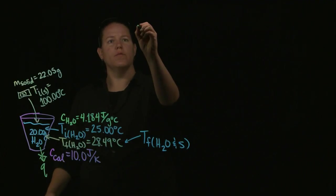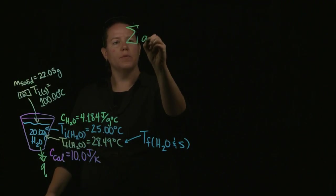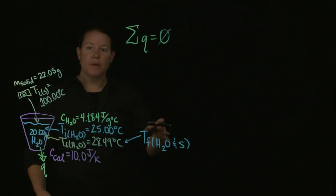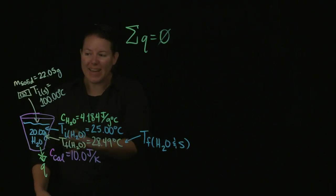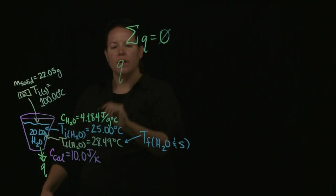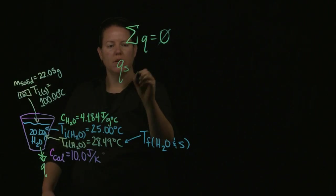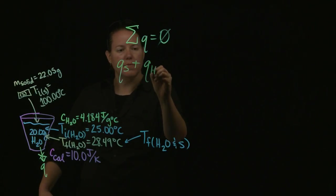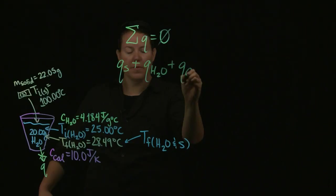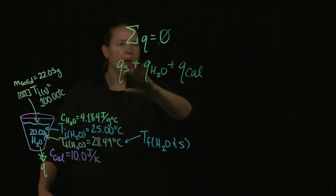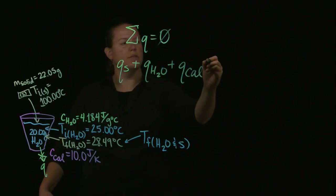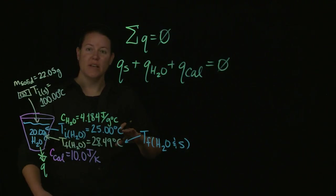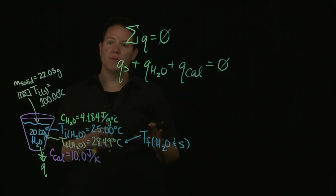The formula for calorimetry is that the sum of the Q's — the sum of the heats — is equal to zero. I'm going to identify a heat for each: a heat for the solid, a heat for the water, and a heat for the calorimeter or the cup. If I add all of those together, that should be zero, because this is all heats within the system.